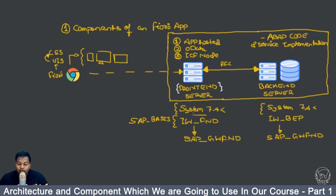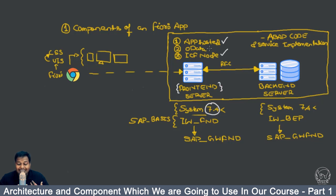The front-end server is basically a SAP server. If you have SAP server version 7.4 or above, you have a front-end server with the capability of hosting your UI5 application. You can expose the OData, and you can also create an ICF node which is responsible for exposing that OData.